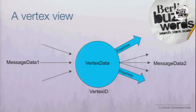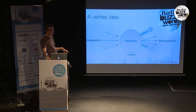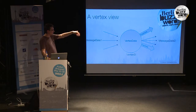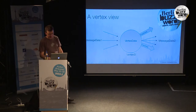Let's recap the vertex view. It's rather simple: messages come in, messages come out. The message data could have different types for incoming and outgoing messages, though for all practical purposes you can assume they're the same type. You have vertex data associated with your vertex, you have vertex ID, and you have outgoing edges each labeled with edge data.